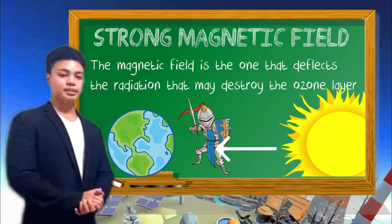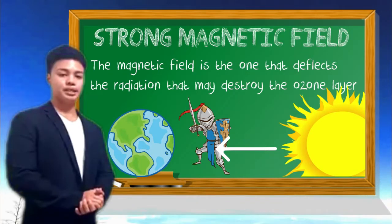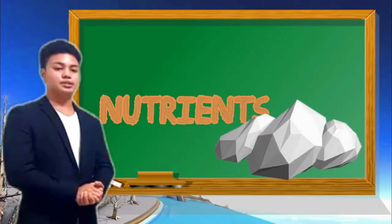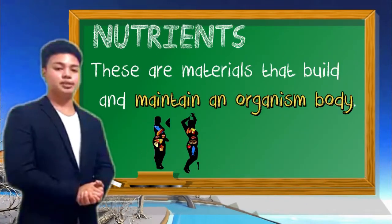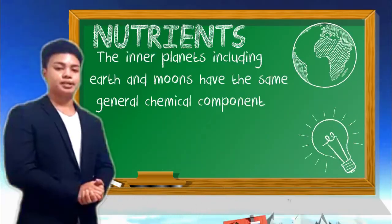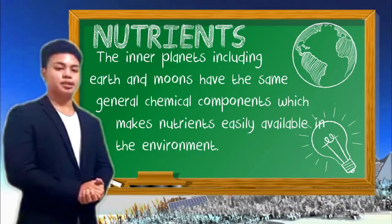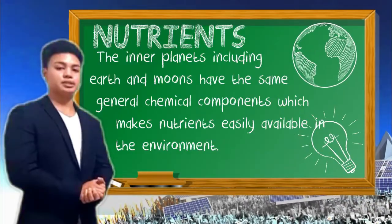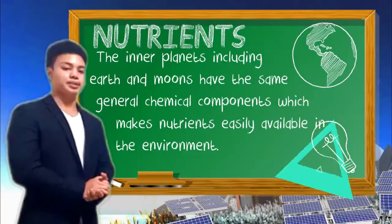Nutrients. These are materials that build and maintain an organism's body. The inner planets, including Earth and Moon, have the same general chemical components which make nutrients easily available in the environment.